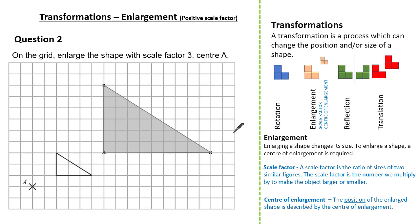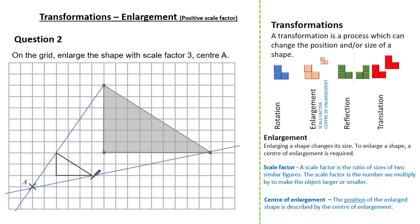The great thing about enlargement is how we can use ray lines to check. A ray line connects corresponding vertices and will always go through the center of enlargement. Connecting this vertex with its corresponding vertex confirms it goes through the center of enlargement. Doing the same for the remaining vertices, you can see all ray lines meet at the center of enlargement — this is a good check.